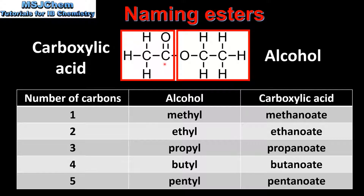In this example we can see there are two carbon atoms in the longest chain. To name the alcohol part of the molecule, we need to count the number of carbon atoms in the longest chain starting from the oxygen atom that has a single bond to the carbon atom. In this example there are also two carbon atoms in the longest chain. Using the table, we can see that if there are two carbon atoms in the alcohol the name changes to ethyl, and the name of the carboxylic acid changes to ethanoate.